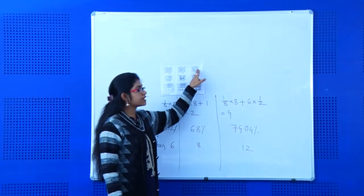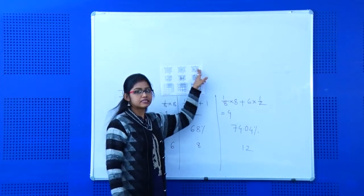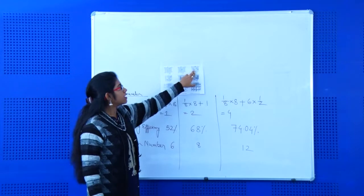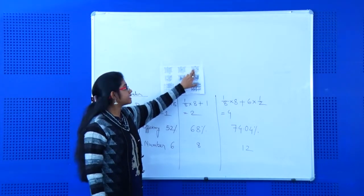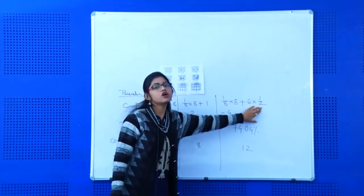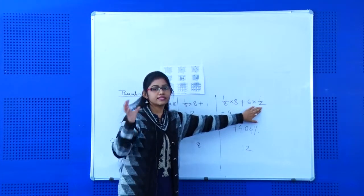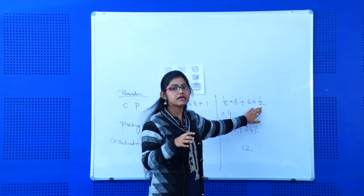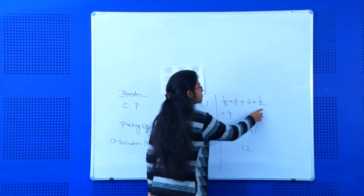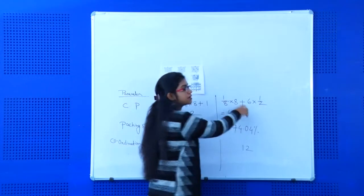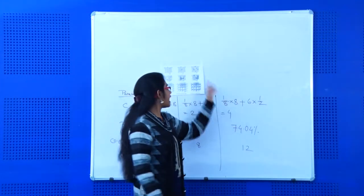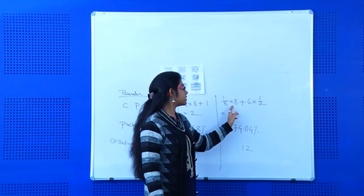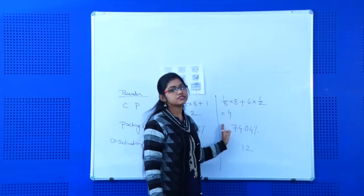For face centered cubic, there are six faces. If we place a constituent particle at each face, only half of that constituent particle is actually inside the cell. So one-half multiplied by six faces, plus one-eighth multiplied by eight corners, gives a total of four constituent particles in FCC.